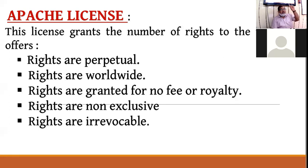So these are your licenses: GPL, Lesser GPL, BSD, MIT (Massachusetts Institute of Technology), and Apache. Total five licenses are there.